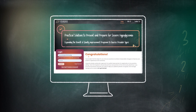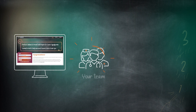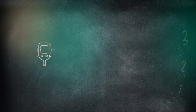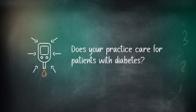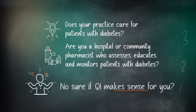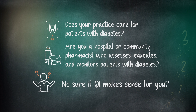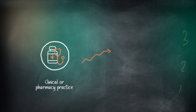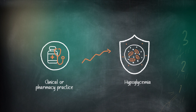This digital QI was designed to make the process easier for your team and your practice, but effective in improving system practices and impactful in improving patient outcomes. Does your practice care for patients with diabetes? Are you a hospital or community pharmacist who assesses, educates, and monitors patients with diabetes? Take a quick look inside to see how this digital QI program, developed by Purdue University College of Pharmacy and the ACHL, can support your clinical or pharmacy practice in quality improvement to prevent and prepare for severe hypoglycemia.